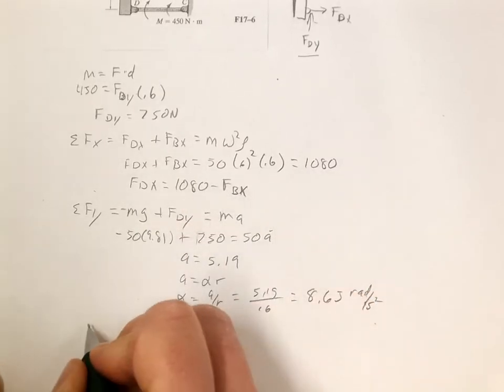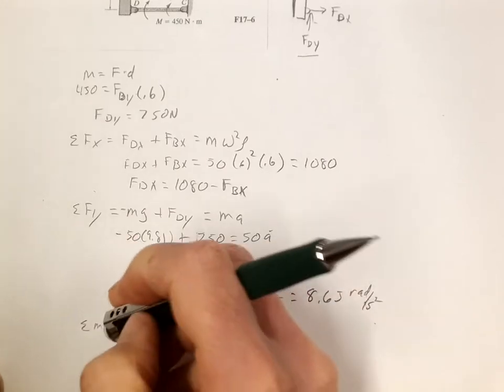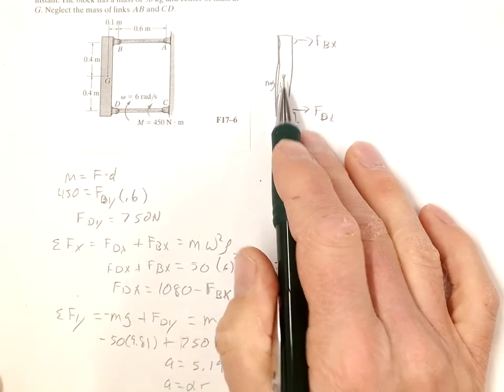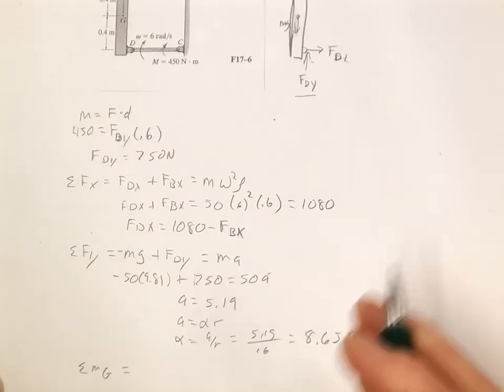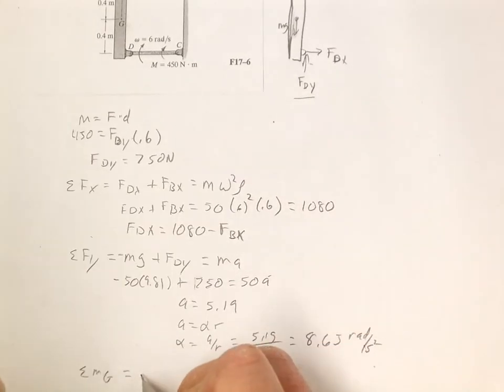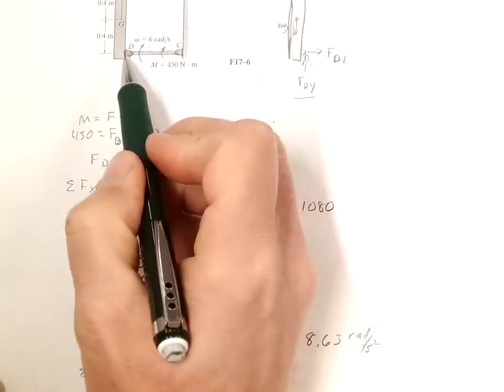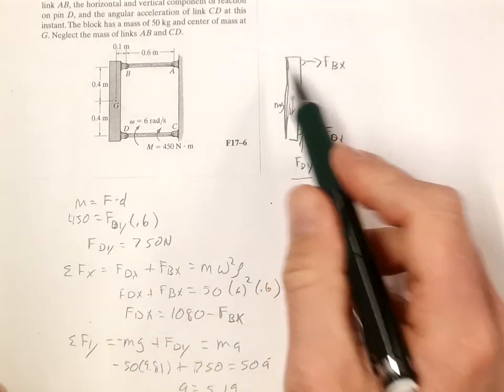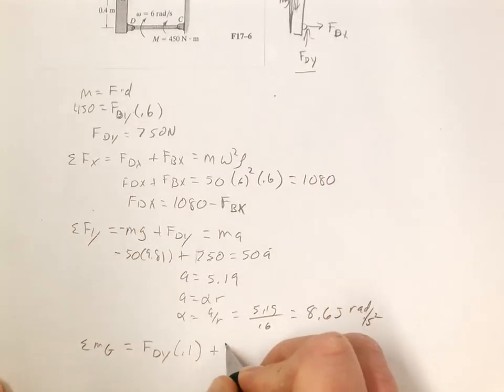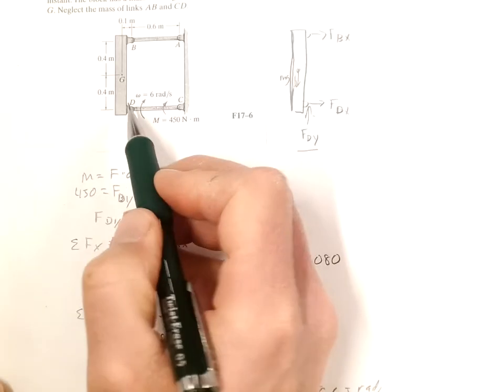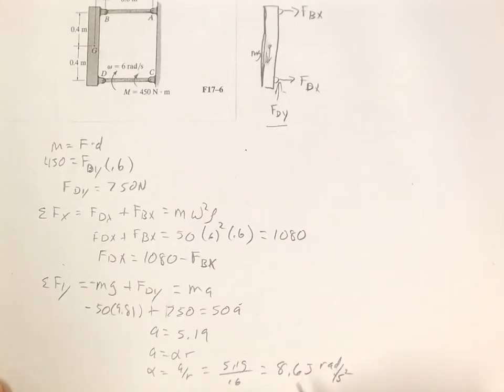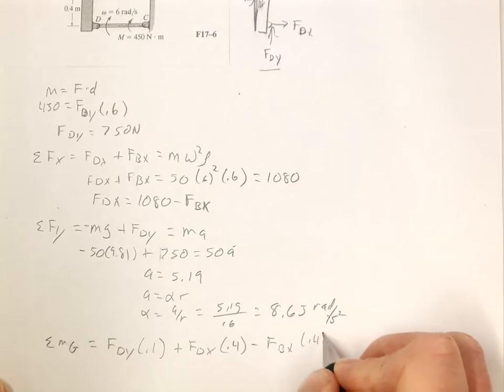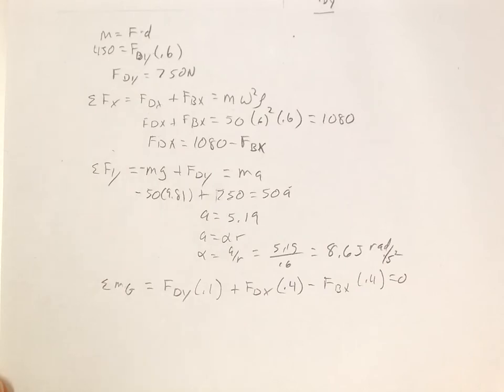We still have two unknowns here, so let's sum the moments about G, center of gravity. If we sum the moments about G here, MG doesn't matter, it goes through G. We have FDY, so FDY is causing a positive rotation, FDY times this distance here which is 0.1. Then we have FDX which is also causing a positive rotation, plus FDX times its distance 0.4. And FBX causes a negative rotation, negative FBX also times 0.4, and those are equal to 0 because there's no rotation around G.